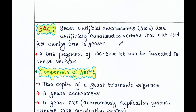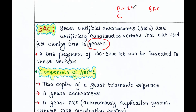Yeast artificial chromosomes or YACs are artificially constructed vectors that are used for cloning DNA in yeasts. In our previous lectures we have seen that we can use plasmid, cosmid, or BAC as vectors in gene cloning methods. In case of plasmid we can insert a foreign DNA fragment up to 25 KB. In case of cosmid it is 45 KB, and in case of BAC it is 100 to 300 KB.